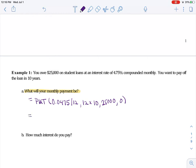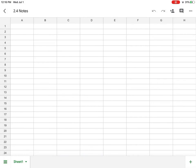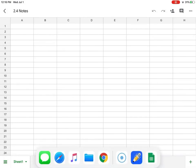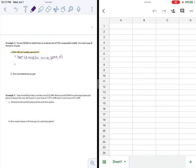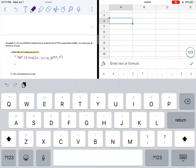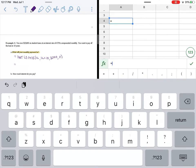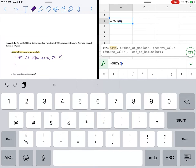Okay, so equals, and I'm going to go back to my sheets and let's go ahead up so I can see it. Okay, so equals payment. See, there it is. Okay, so my rate is 0.0475, divide it by 12, and then I'm going to do 12 times the 10 years.